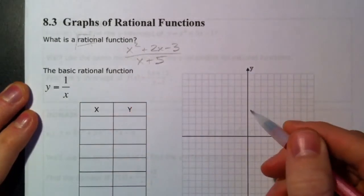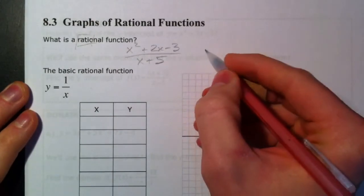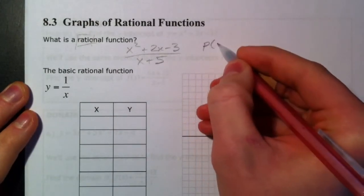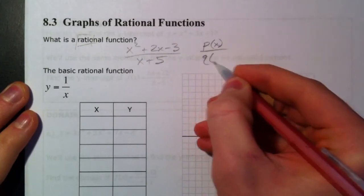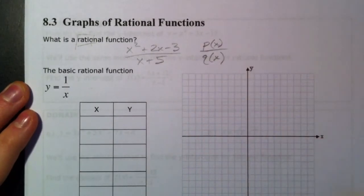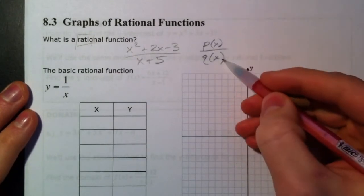And so there is your first example. It's got to be some p of x, some polynomial on top, over some q of x. And I use those letters just because it's pretty standard across the board. And it's just one function over another function.